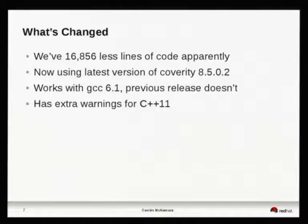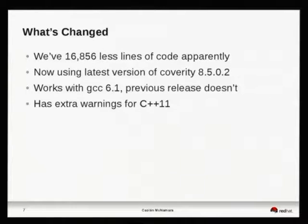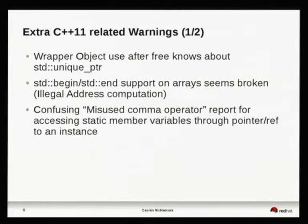Since this time last year, we have 16,000 fewer lines of code in our project, which is nice. We're now using the very latest version of Coverity, which works with GCC6 — the previous Coverity doesn't. And this now has extra warnings for C++11. The new warnings in Coverity mean it now knows much more about C++11 features than it did before.